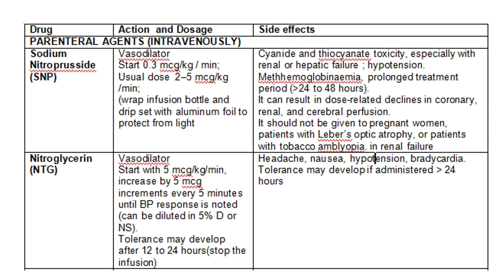Important drugs used in the emergency room: sodium nitroprusside is a vasodilator — start with 0.3 mcg/kg/min, with a usual dose of 2 to 5 mcg/kg/min. The infusion bottle and line must be wrapped and protected from light; otherwise the patient can develop thiocyanate toxicity. Another important side effect is methemoglobinemia. These are uncommon but can occur with unusually high doses, prolonged treatment, or if the bottle is not wrapped with silver foil.